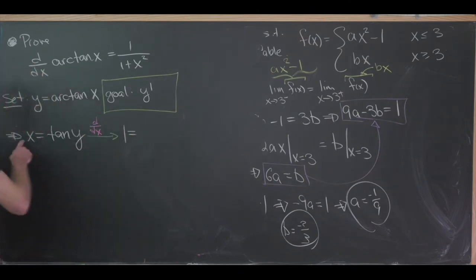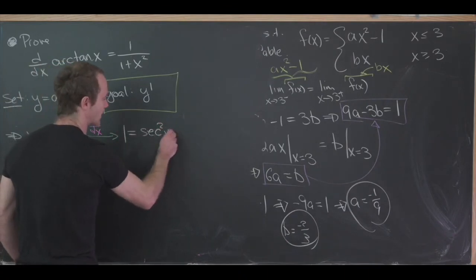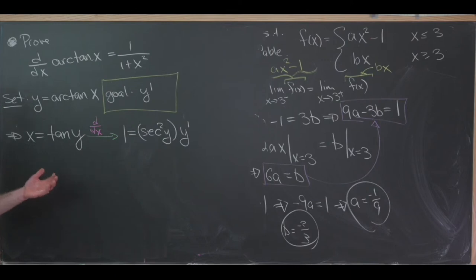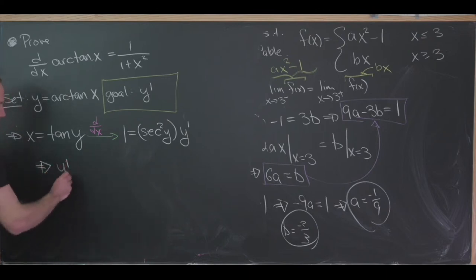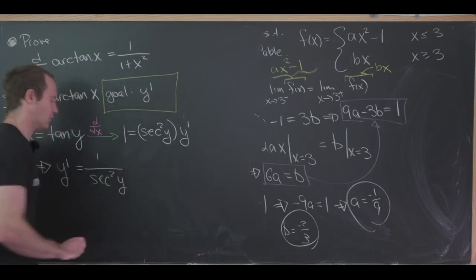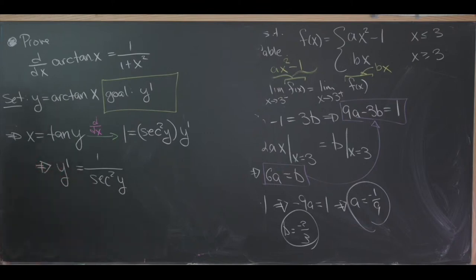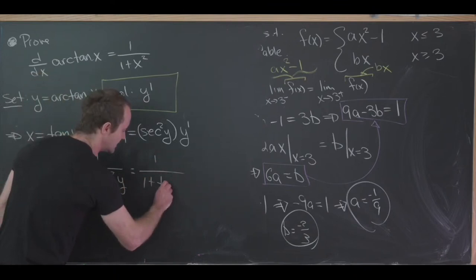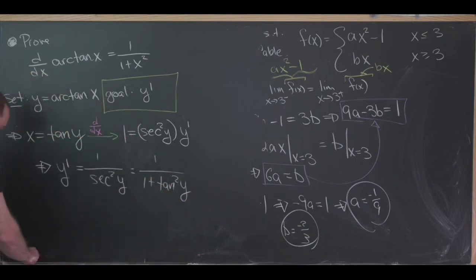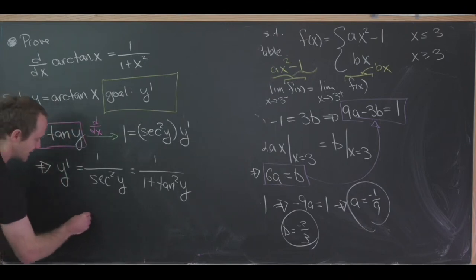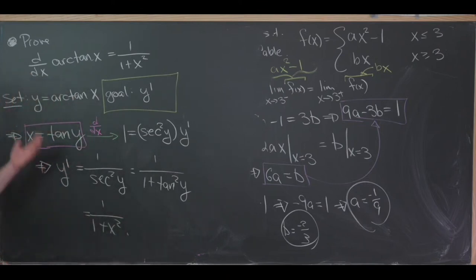That gives us one on the left hand side. On the right hand side, it gives us secant squared of y times y prime by the chain rule — the derivative of tangent is secant squared, and the derivative of y with respect to x is y prime. So y prime equals one over secant squared of y. We only know how to express x in terms of tangent of y, so we use the Pythagorean trig identity: secant squared equals one plus tangent squared. So y prime equals one over one plus tangent squared y. Since x equals tangent of y, this is one over one plus x squared — exactly what we wanted.